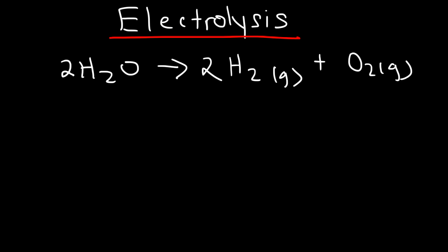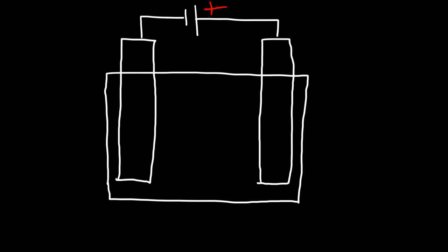A quick and simple way to do this is to take a beaker and fill it with water. We need to use two electrodes — one is going to be the anode and one will be the cathode. I'm going to use two carbon-based graphite electrodes and connect a nine-volt battery to it. The long side is the positive terminal and the short side is the negative terminal. I'm also going to dissolve sodium hydroxide into the solution.